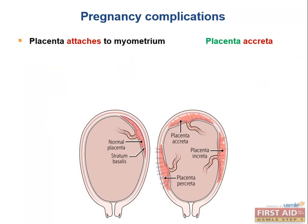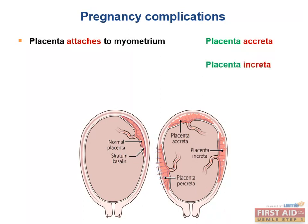Placenta accreta occurs when the placenta invades the myometrial wall of the uterus, digging deeper than it normally should. When it comes time to deliver, the placenta is basically stuck, and removing it can lead to massive bleeding. This occurs more often in patients who have had a prior C-section or placenta previa. The USMLE wants you to know that placenta accreta can lead to postpartum hemorrhage. In summary: painless antenatal bleeding is placenta previa; painful antenatal bleeding is abruptio placentae; postpartum bleeding is typically placenta accreta.